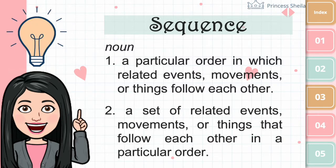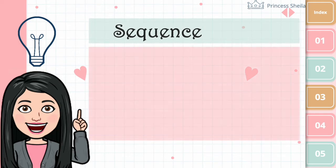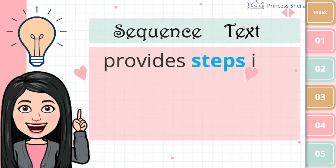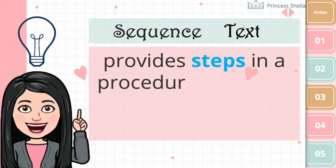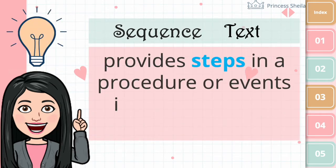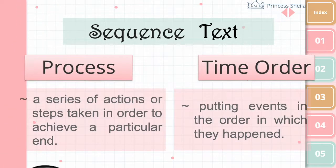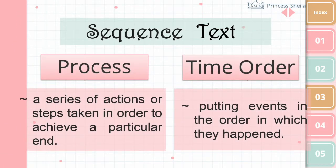So, a sequence text structure provides steps in a procedure or events in chronological order. In sequence text, information can be presented by listing a process, or in time order of events.